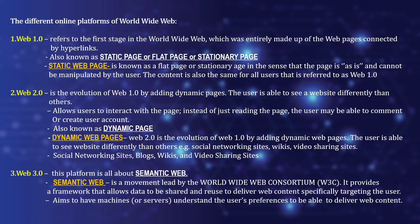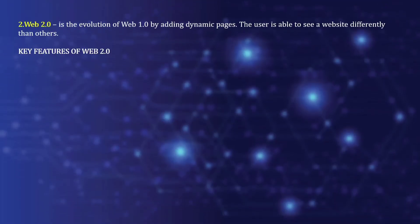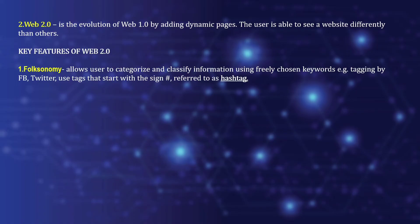Web 3.0 is the semantic web — a movement led by the World Wide Web Consortium (W3C). It provides a framework that allows data to be shared and used to deliver content specifically targeting the user. It aims to have machines or servers understand the user's preferences in order to deliver web content. Examples of Web 3.0 are Alexa, Siri, and Google.